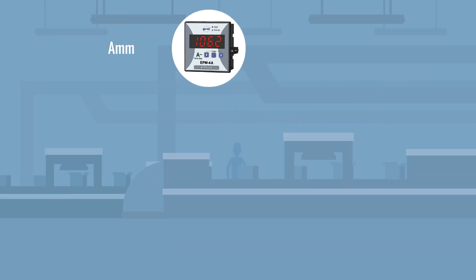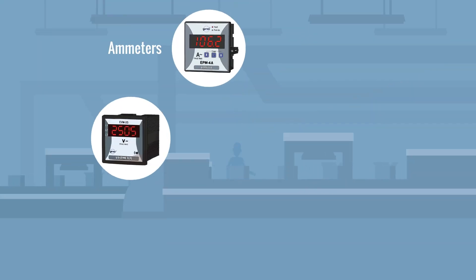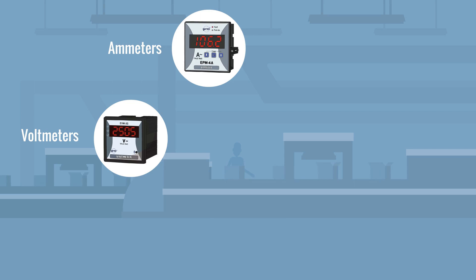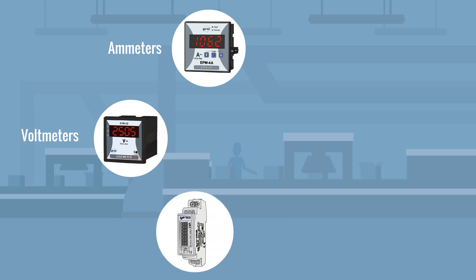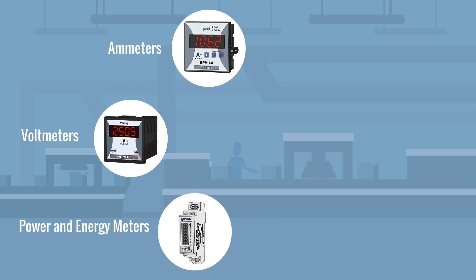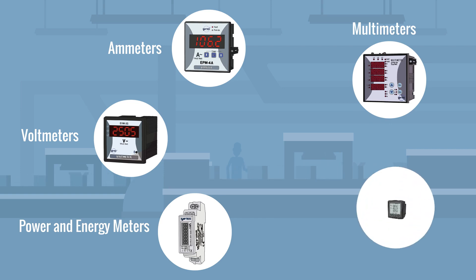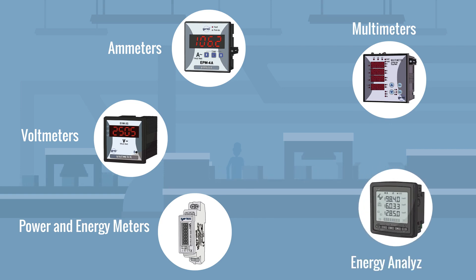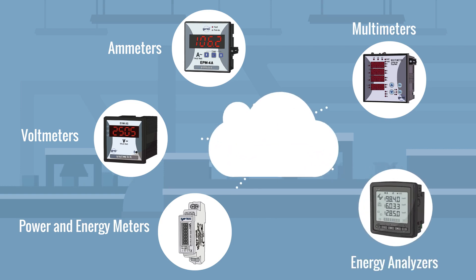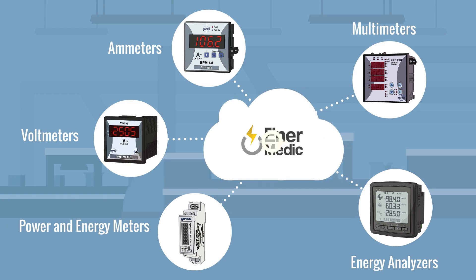You can use ammeters for monitoring current values, voltmeters for monitoring voltage values, power and energy meters for monitoring consumption values, and multimeters and energy analyzers if you want to monitor all these parameters and more from a single device.